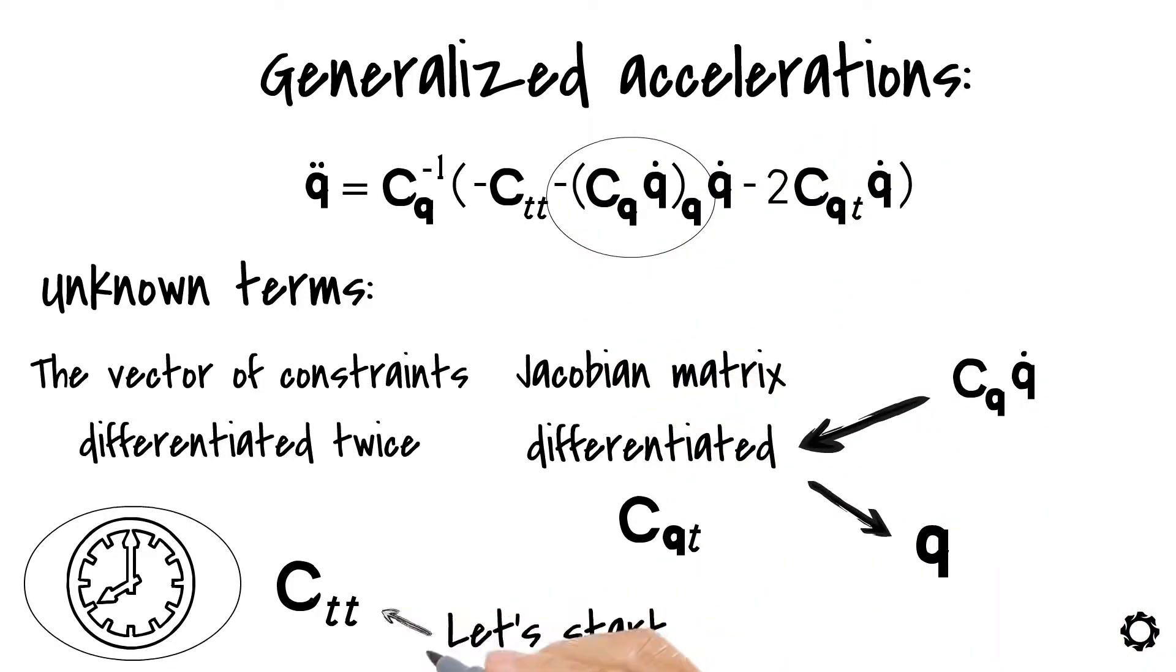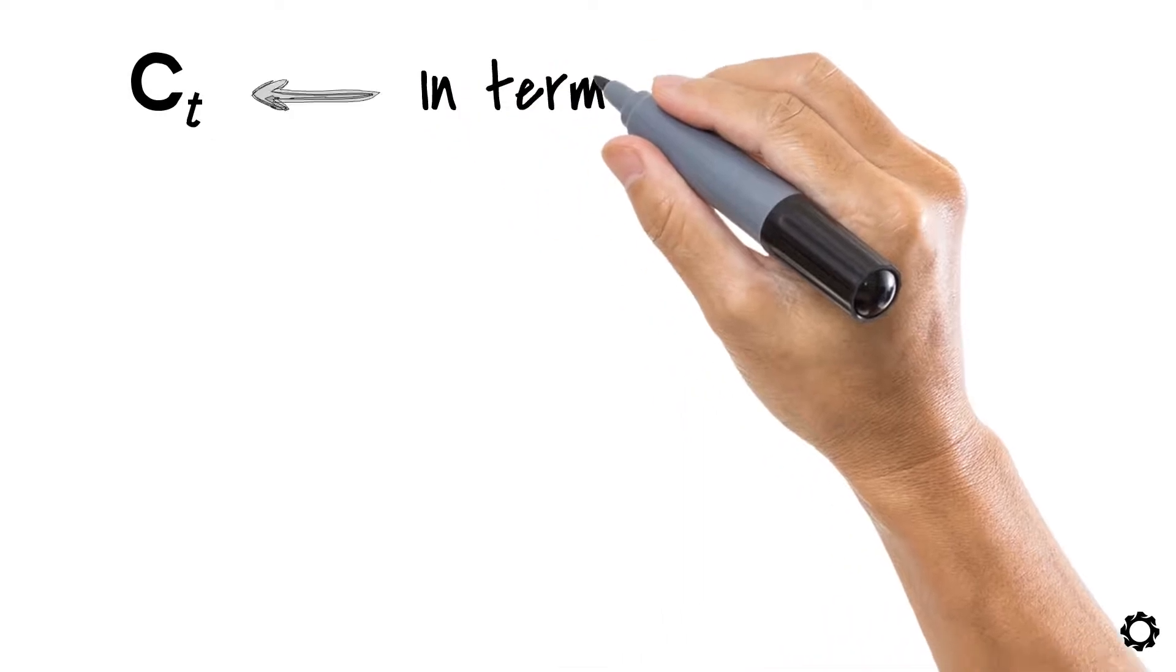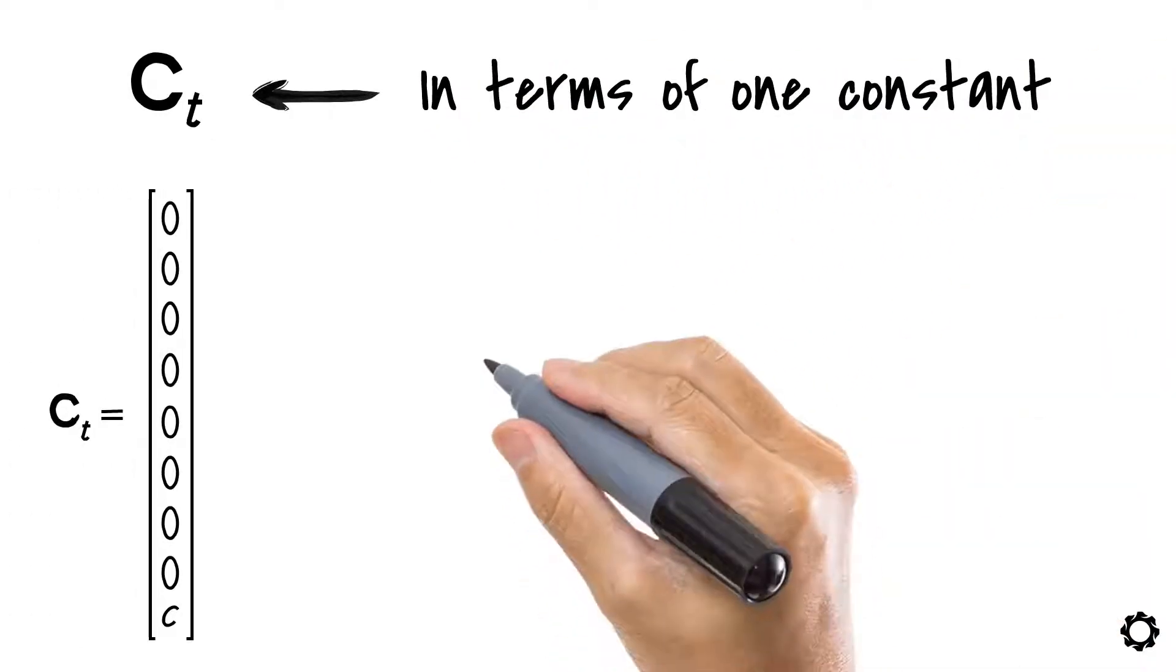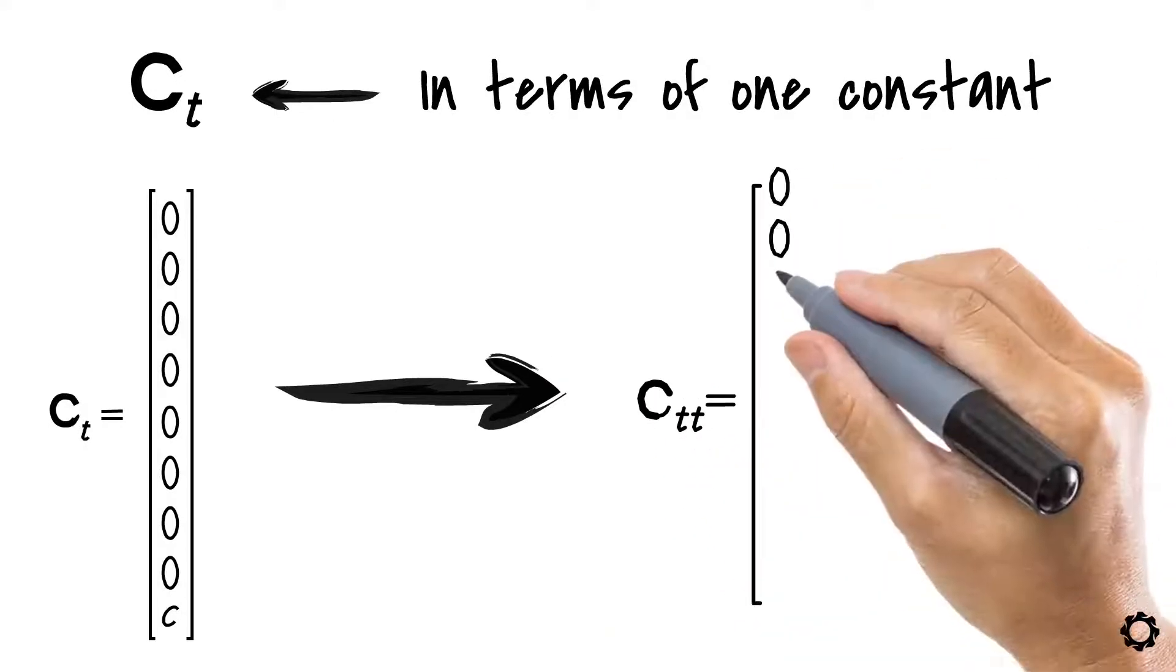Let's start with the vector ctt. This is very straightforward. If you remember, the vector ct was in terms of one constant. Hence, our vector ctt will be a zero vector.